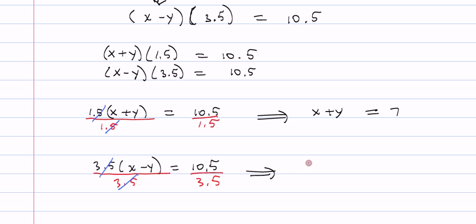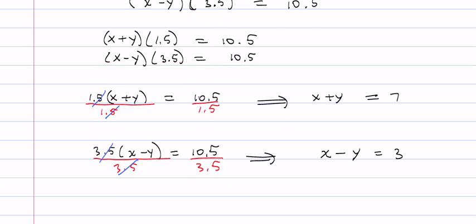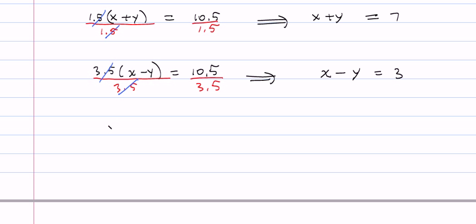So this equation turns into x minus y is equal to, and 10.5 divided by 3.5 is equal to 3. So now we're dealing with two much easier equations.